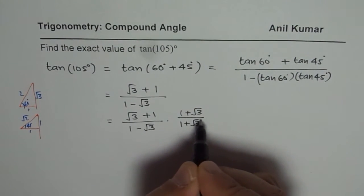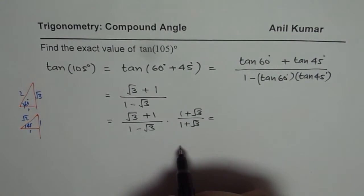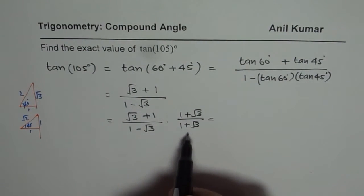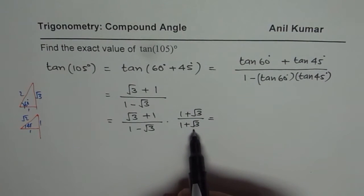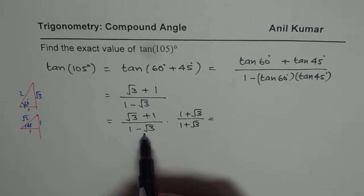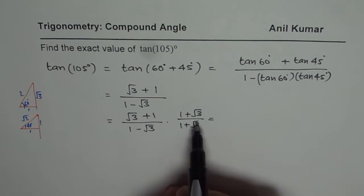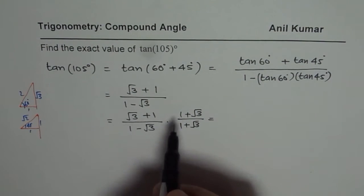Now it is important to understand this because in multiple choice questions, you may not have that choice. So let us multiply both numerator and denominator by conjugate of denominator, which is 1 plus square root 3. It is multiplying by 1, which you can always do. So let us expand.